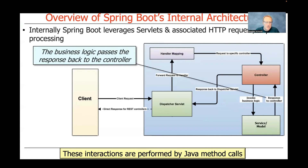After the service is done with its thing, the business logic portion passes the response back to the controller. The controller then takes those native types and converts them back into HTTP-related types at the messaging level. That conversion process is usually handled automatically by generated code or code used through the reflection mechanisms baked into Spring. The bulk of these interactions are performed by plain Java method calls, shielding you from the distractions of HTTP request and response processing.